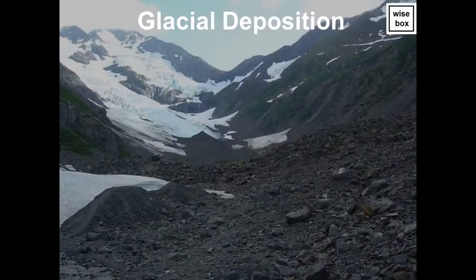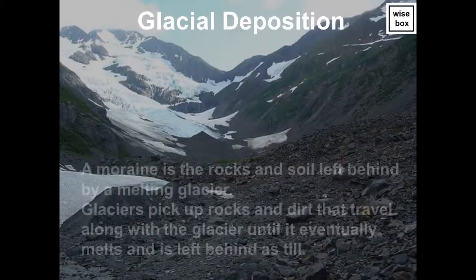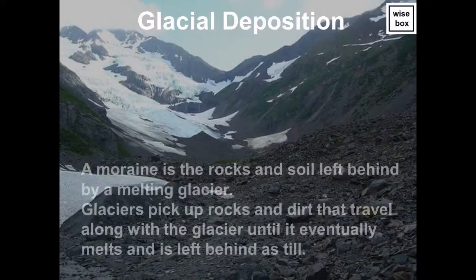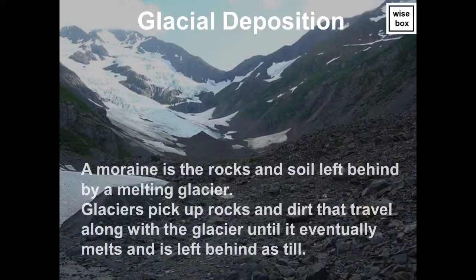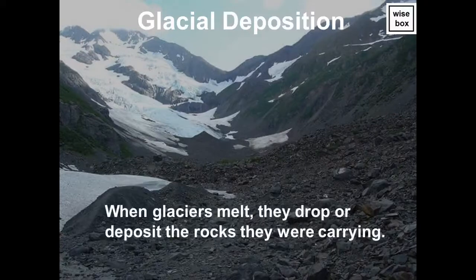Glacial deposition: a moraine is the rocks and soil left behind by a melting glacier. Glaciers pick up rocks and dirt that travel along with the glacier until it eventually melts and is left behind as till. When glaciers melt, they drop or deposit the rocks they were carrying.